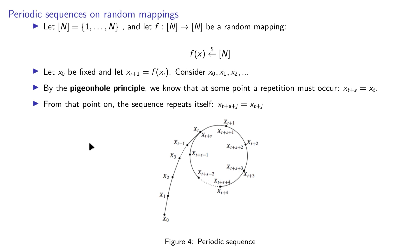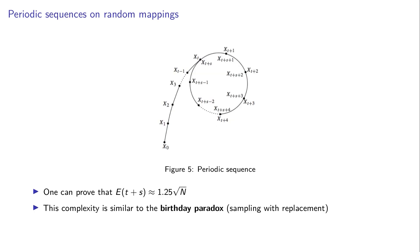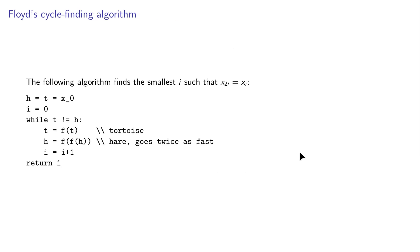We can take advantage of this property to define an algorithm to find the discrete logarithm. The expected value of this repetition is about the square root of n. This is similar to the birthday paradox, as we are sampling with replacement.